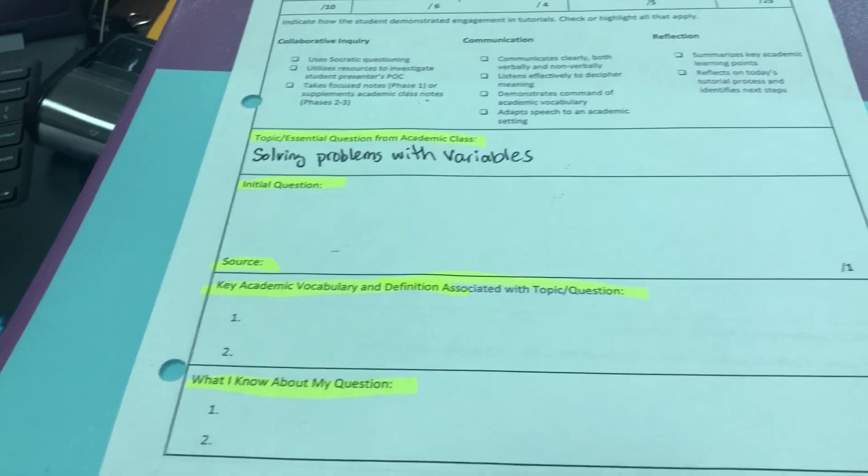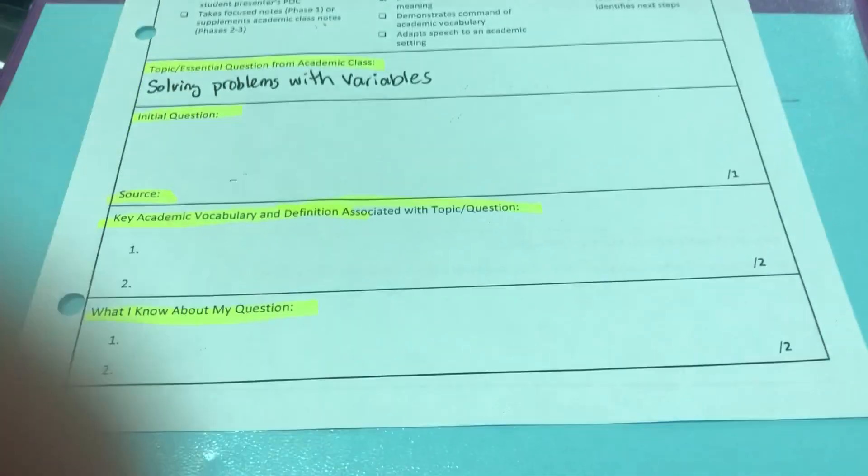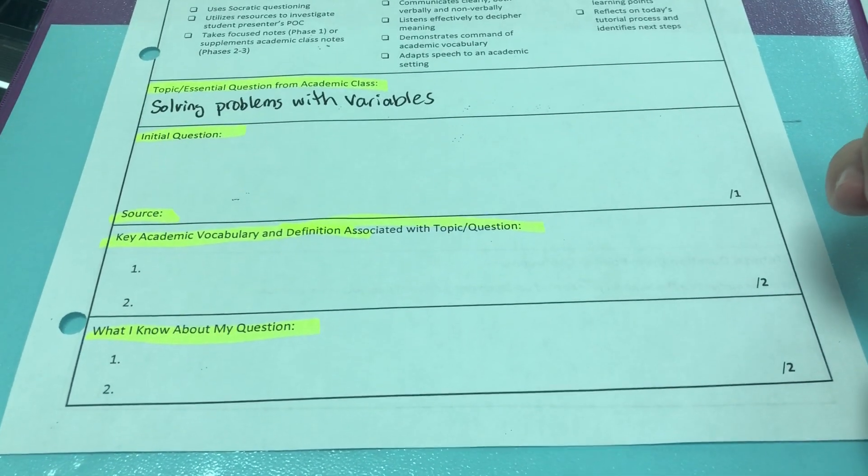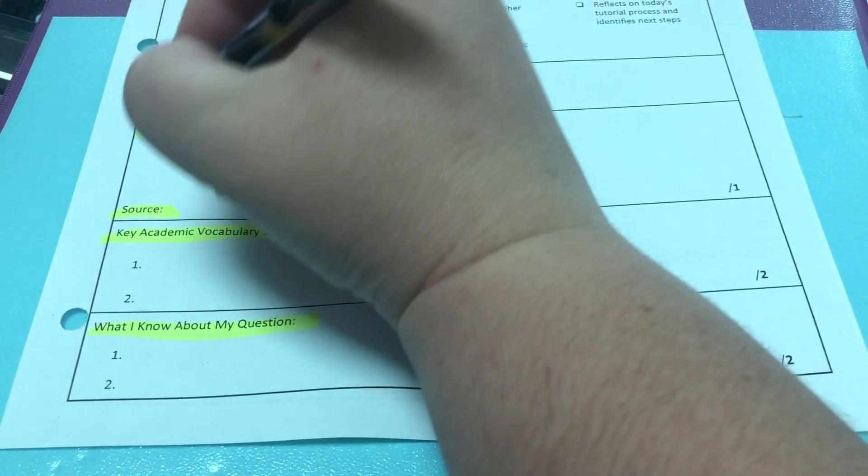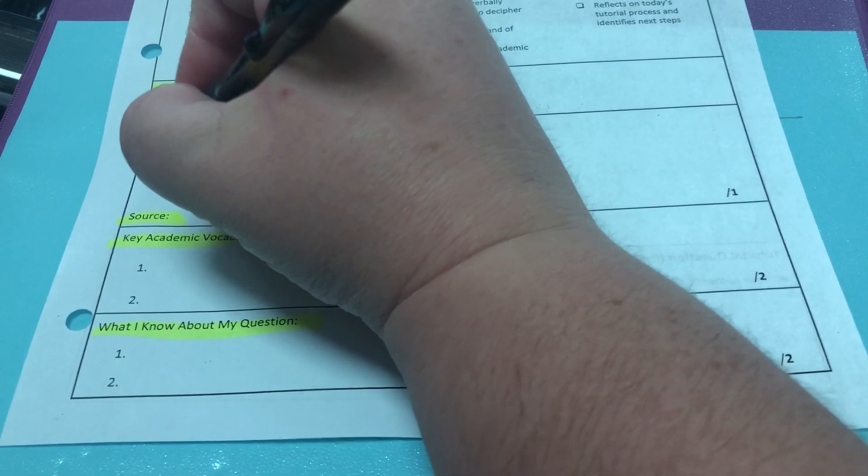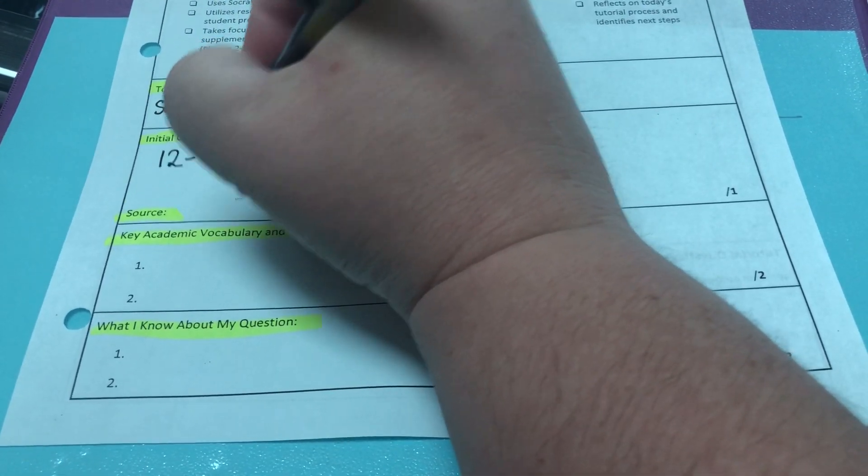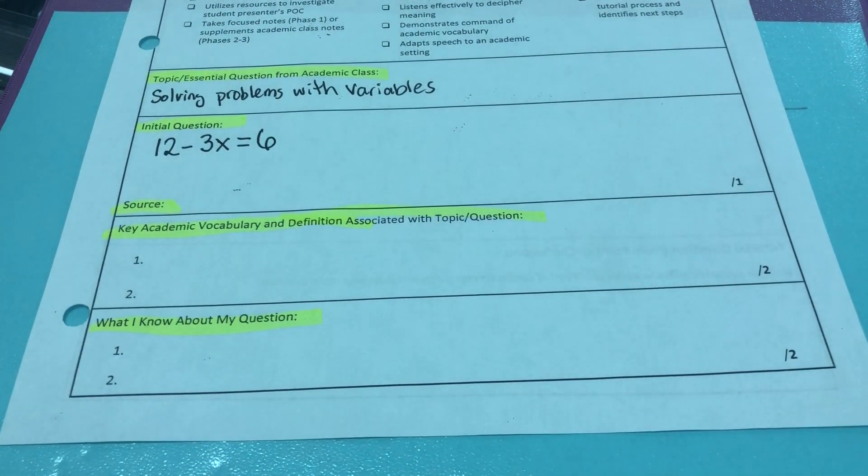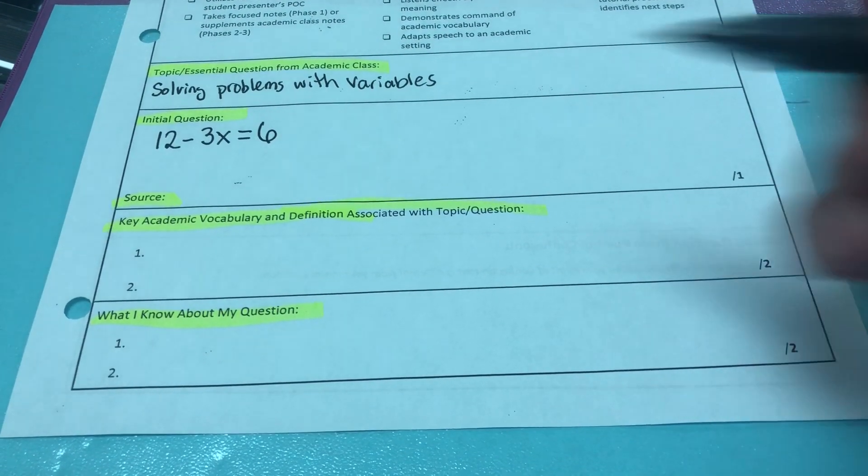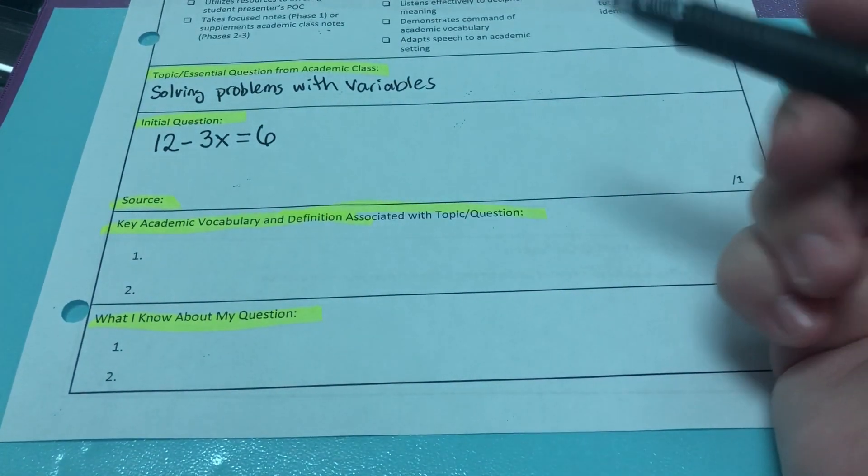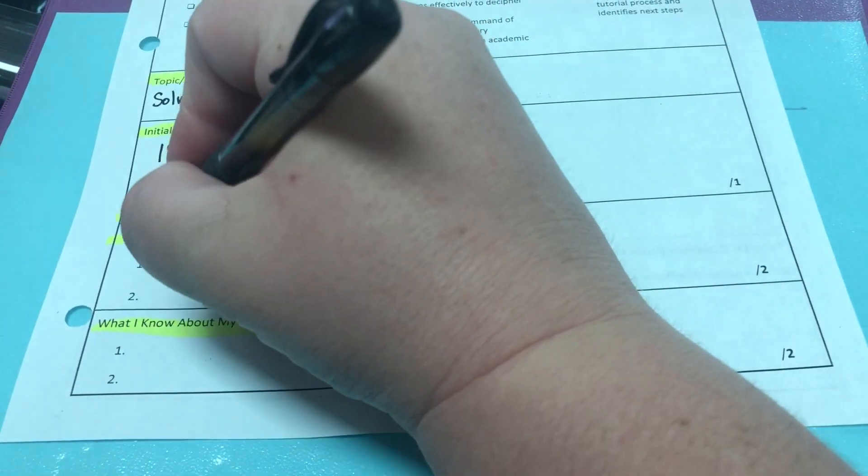My initial question is going to be the question that I have that I am struggling with. So for this particular one, my question is actually going to be the math problem, which I have is 12 minus 3x equals 6. And then the source of this, I said before, it was a math homework problem, so I'm going to write math homework.